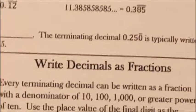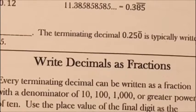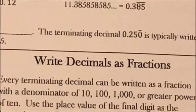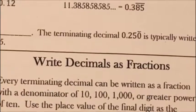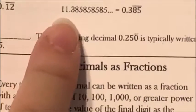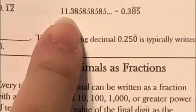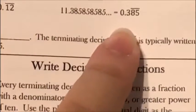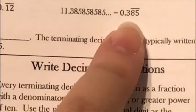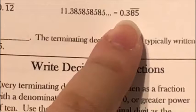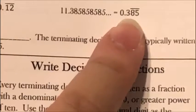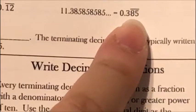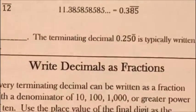I also have 11.3858585... Notice here the three does not repeat, but the 85 does. So when I write this, I have 11.385 with the bar only over the 8 and the 5, because those are the two digits that are repeating.